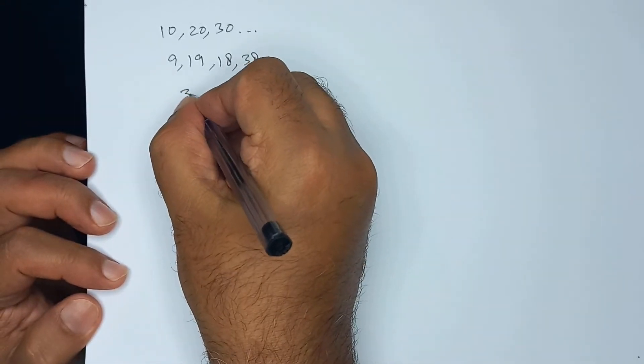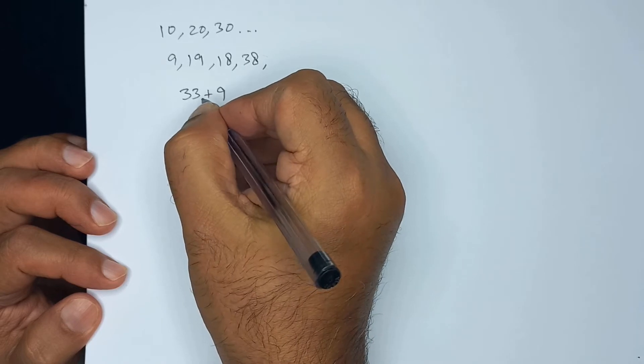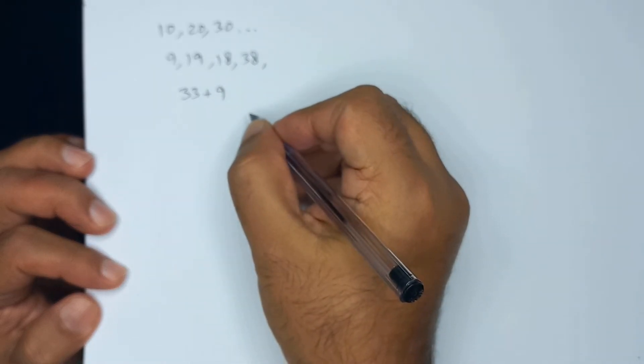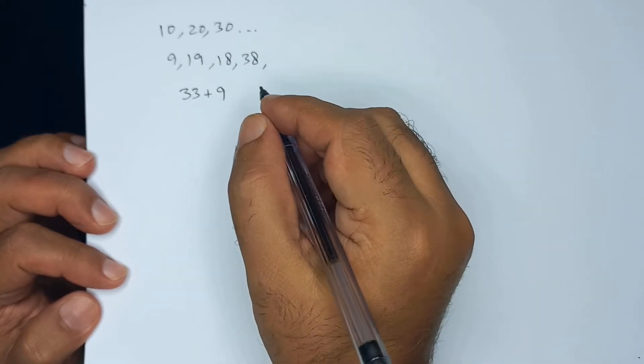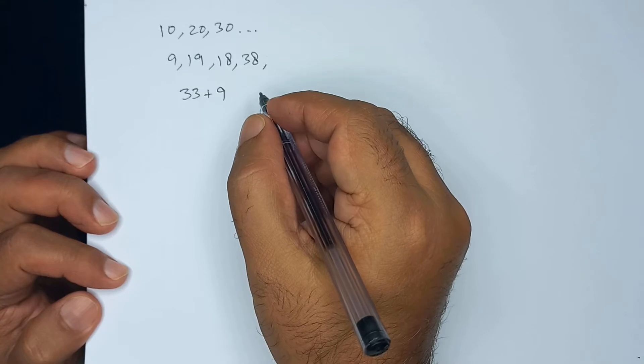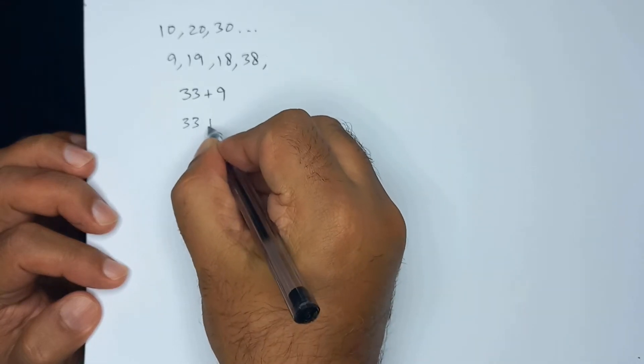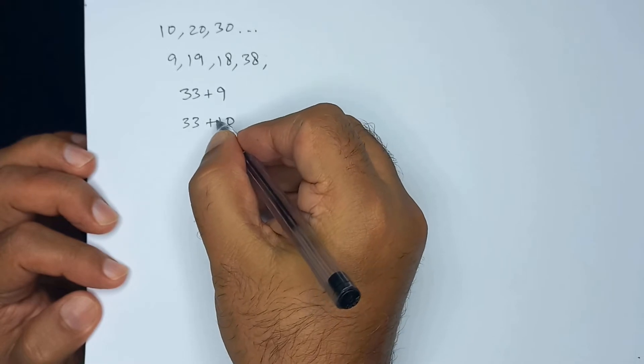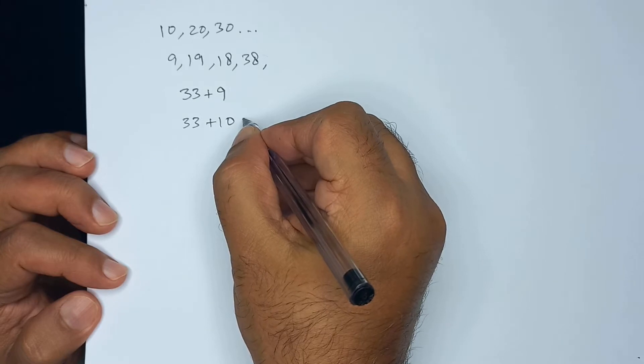Let's say we want to find 33 plus 9. Now, as 9 is 1 below 10, we can do this by adding 10. If we have 33, we add 10 and then take 1 away.